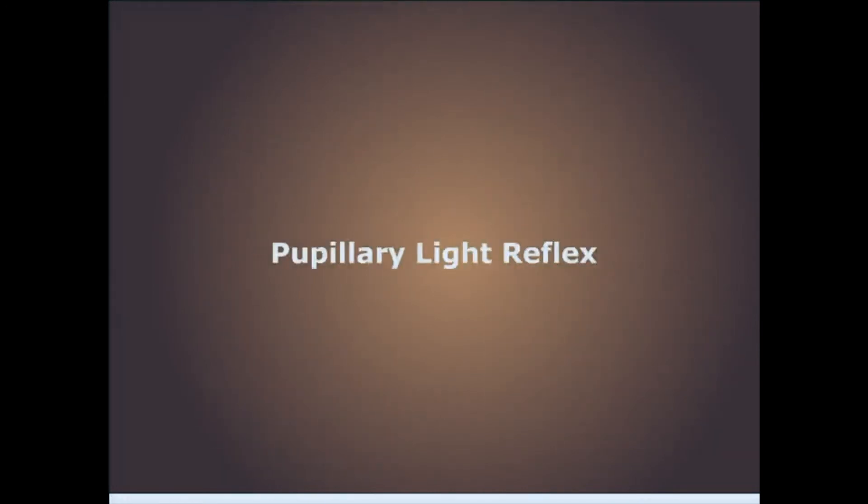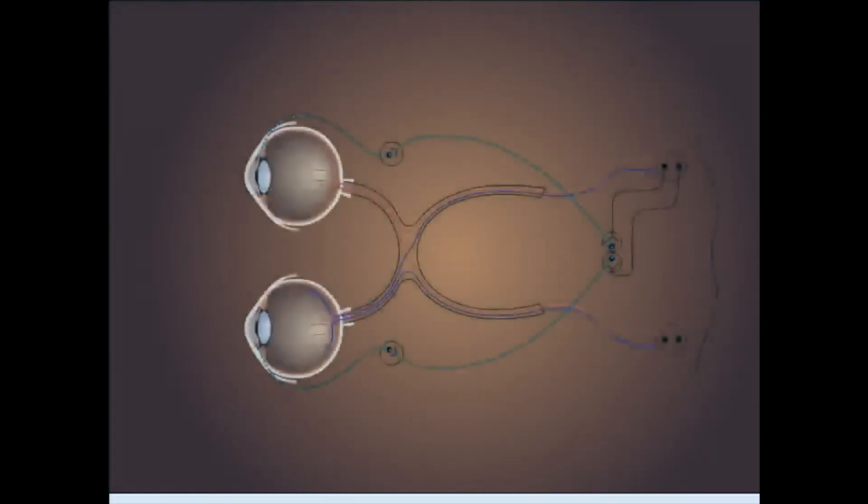Pupillary light reflex. When light is directed to the eye, it stimulates retinal photoreceptors. The impulse is then carried through the optic nerve, which is the afferent limb of the pupillary light reflex. It then continues through the visual pathways. Just before reaching the lateral geniculate nucleus, afferent fibers leave to enter the midbrain, where they synapse in the pretectal nucleus.